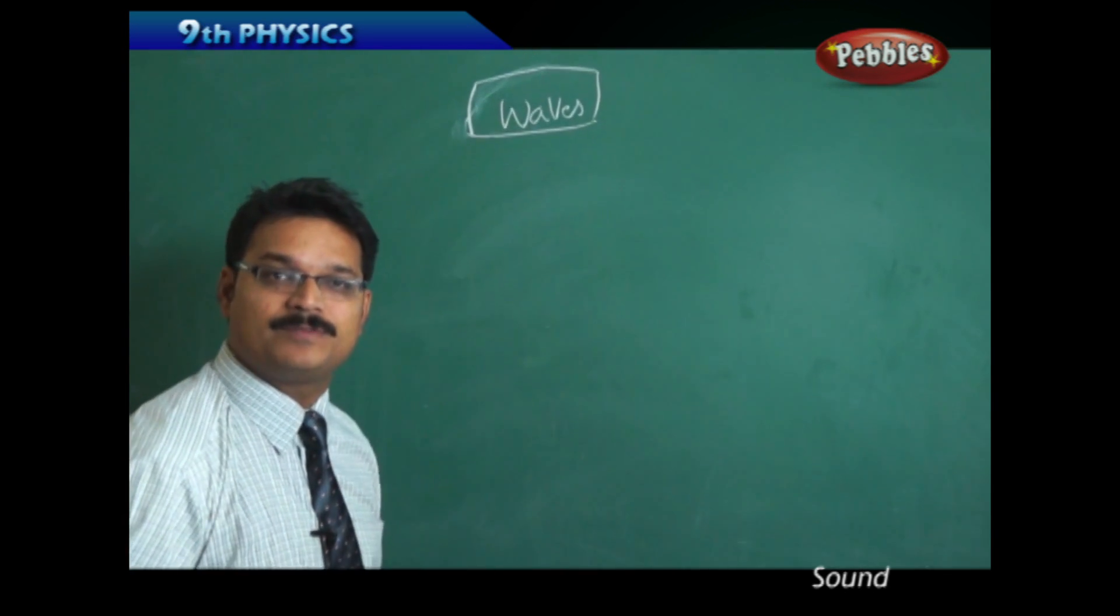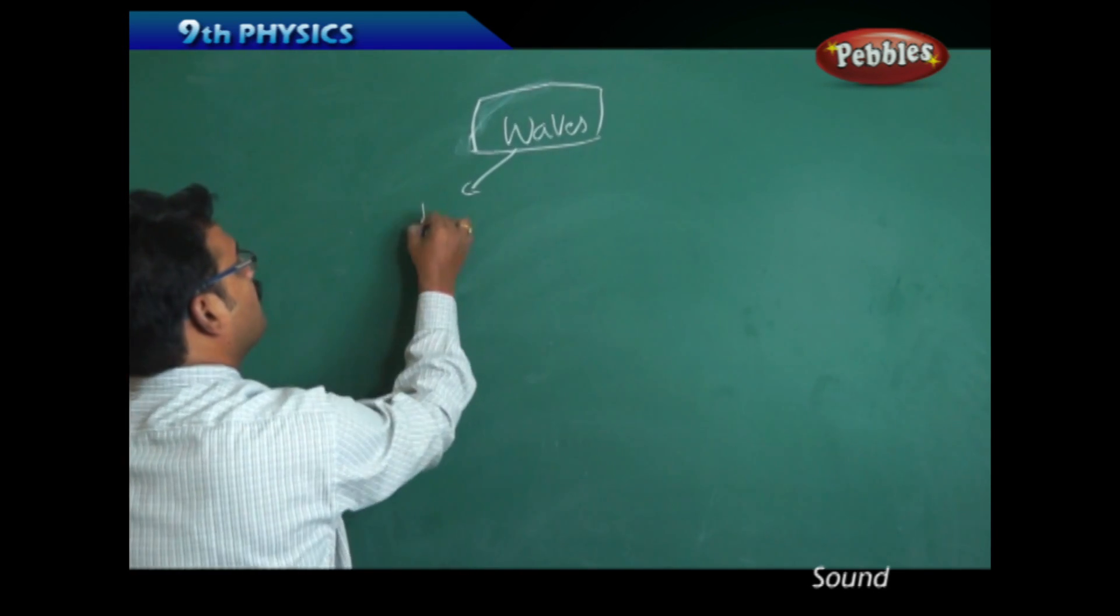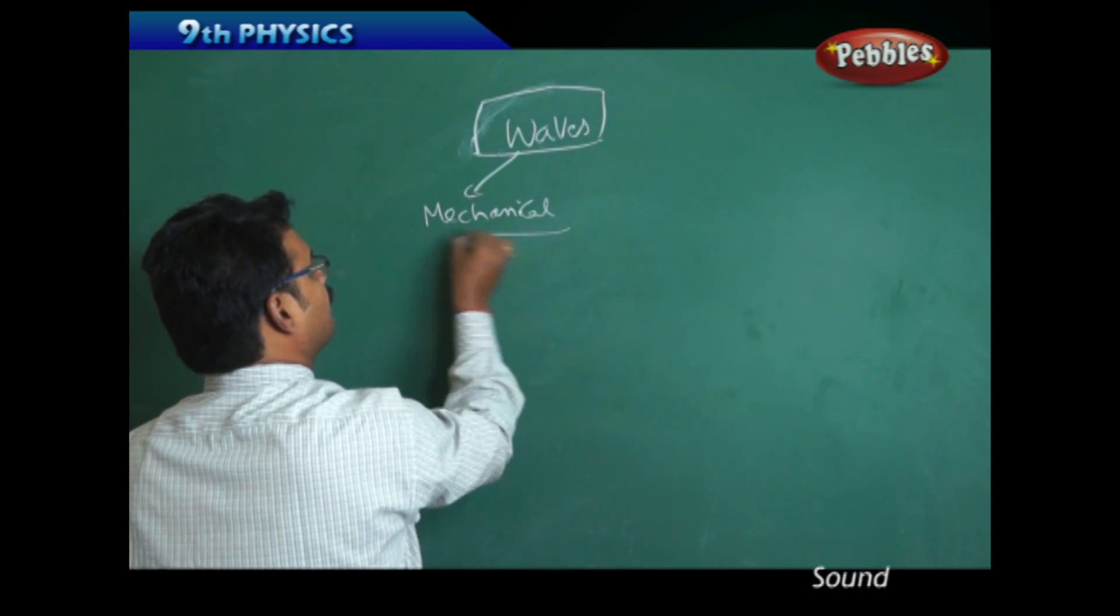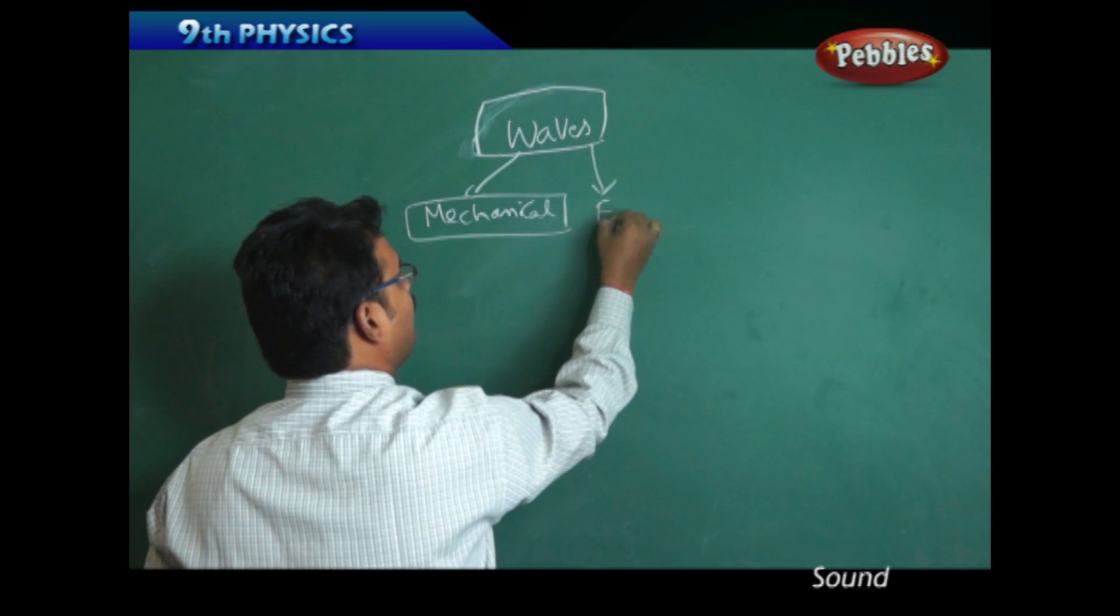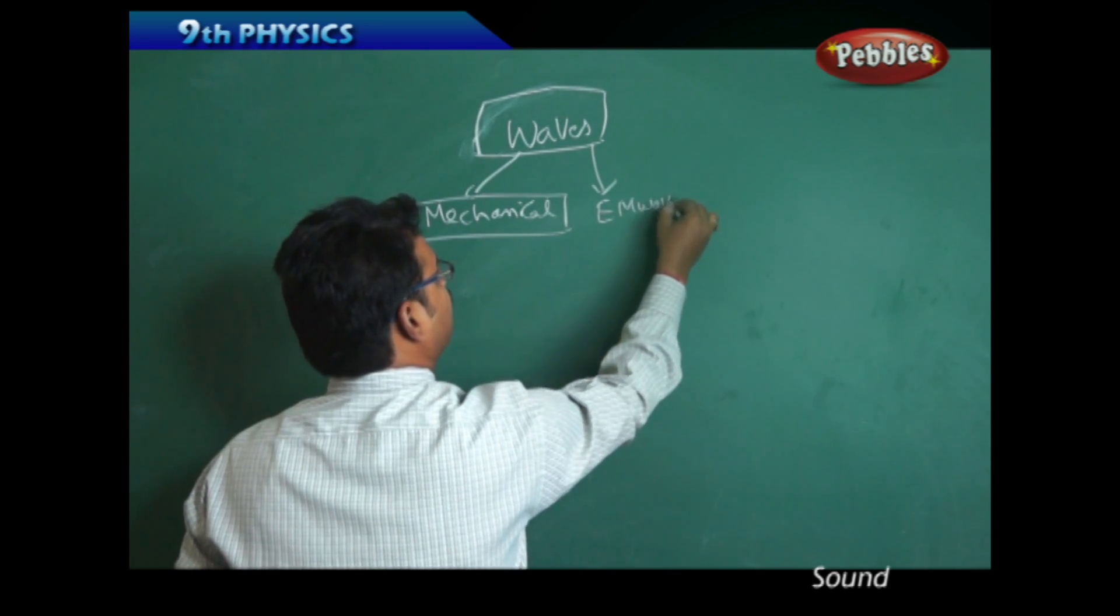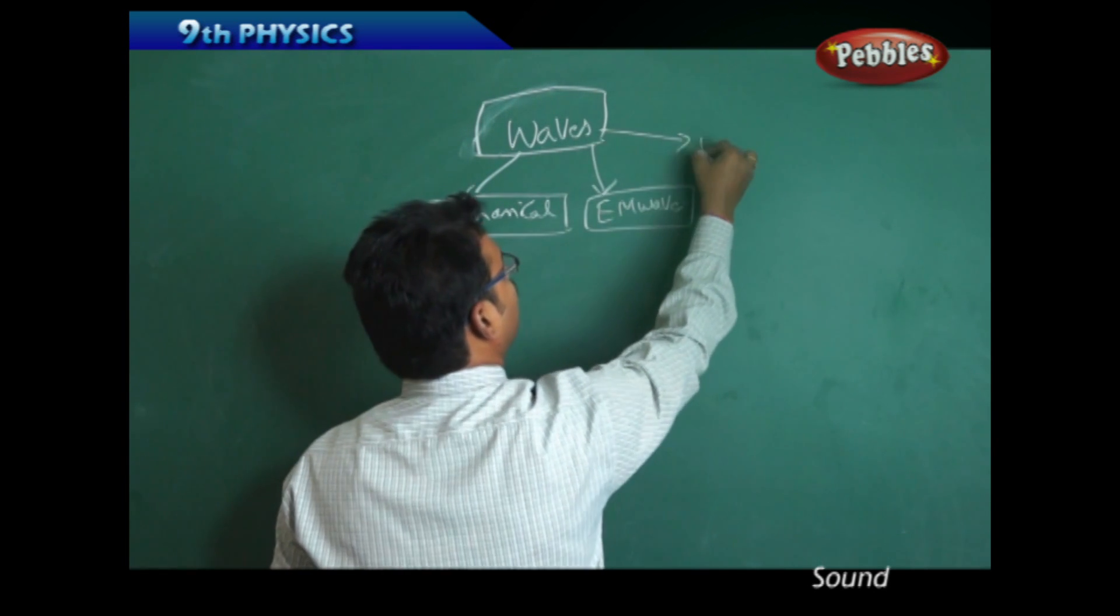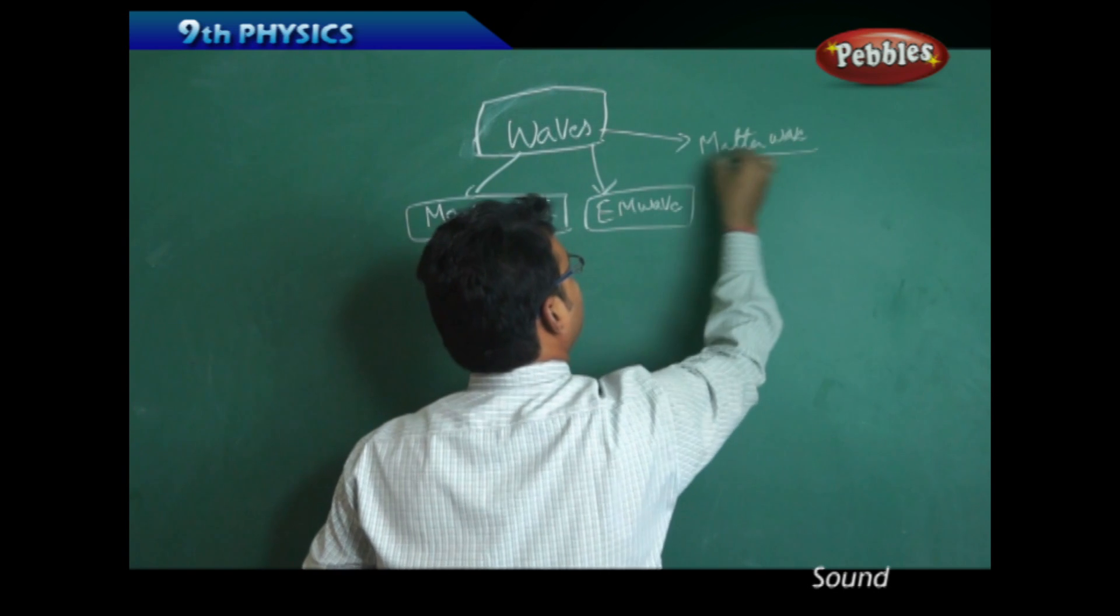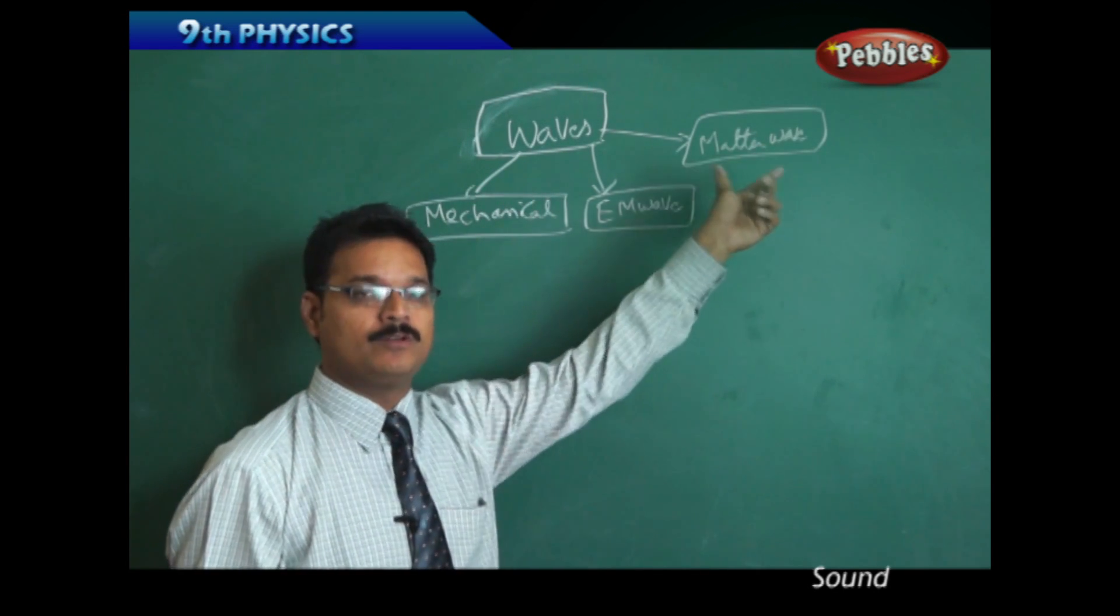We have different types of waves. One type is mechanical wave, second type is electromagnetic wave, and third type is matter wave. Here we won't discuss electromagnetic waves or matter waves; those will be discussed in different chapters.